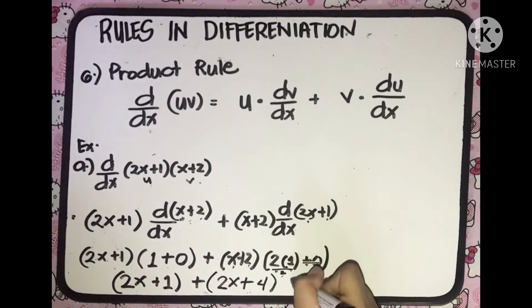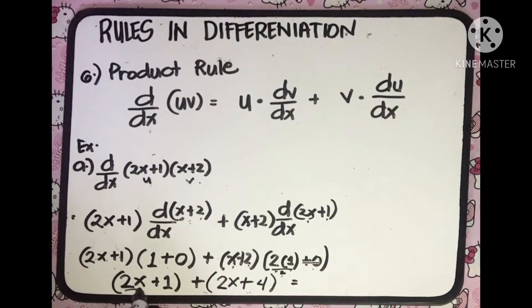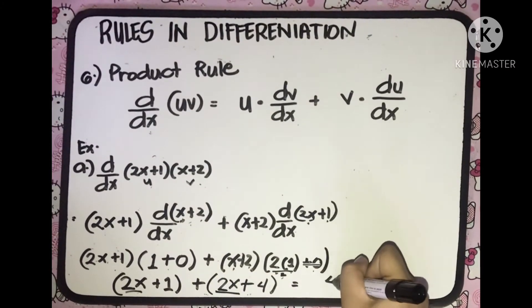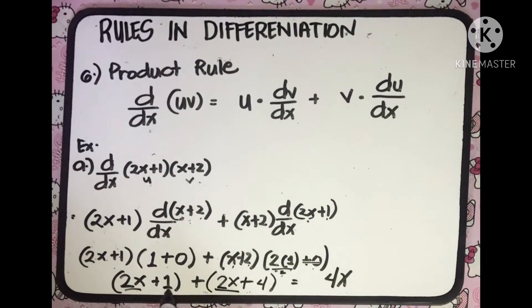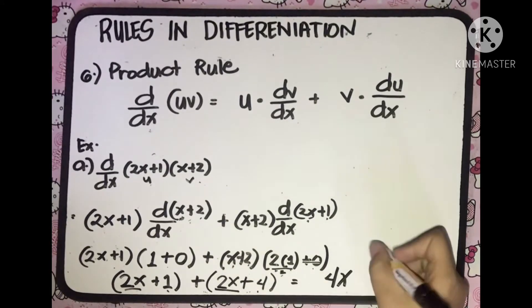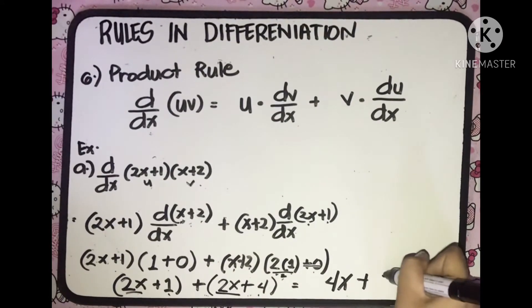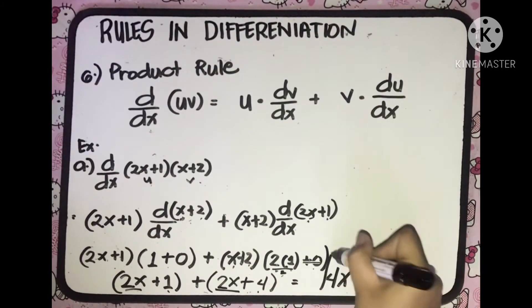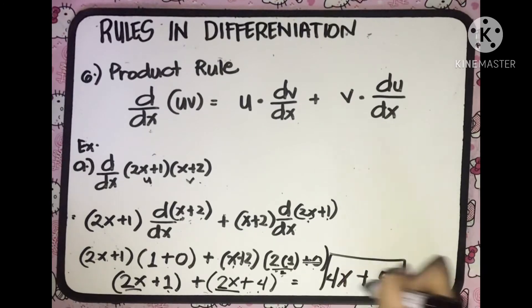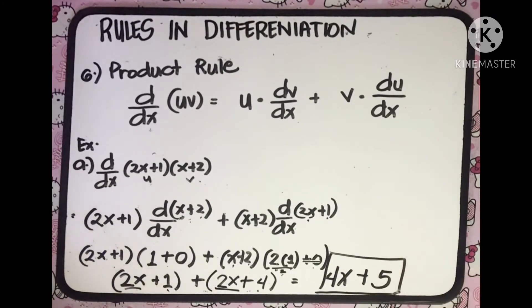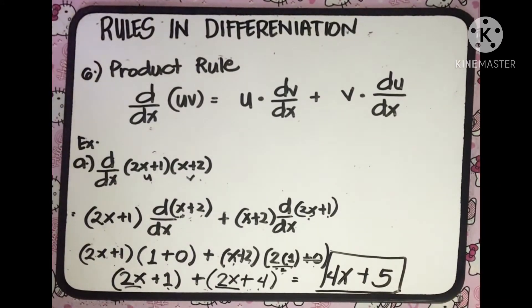Combining like terms: 2x plus 2x equals 4x. And positive 1 plus positive 4 equals 5. So the derivative of the given function is 4x plus 5.